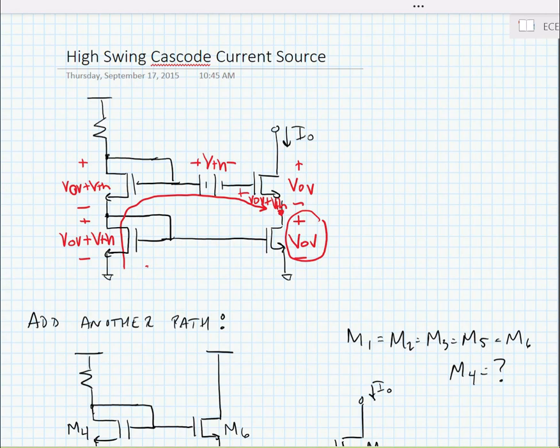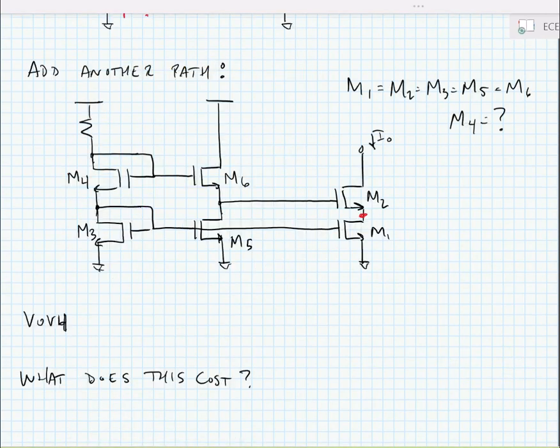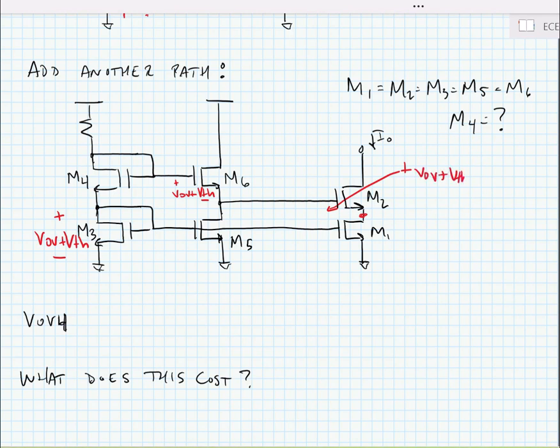We have a solution to this, and that is to add another path. So let's assume that all the transistors in this circuit are now equal except for M4. Well, we know that they're all going to then have equal Vov plus Vth's. And our goal is for M1 to only need one Vov across its drain to source terminal.